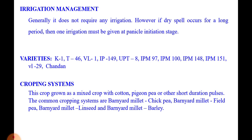The improved varieties of sawan or barnyard millet are: K1, T46, VL1, IP149, UPT8, IPM97, IPM100, IPM148, IPM151, VL29, and Chandan.